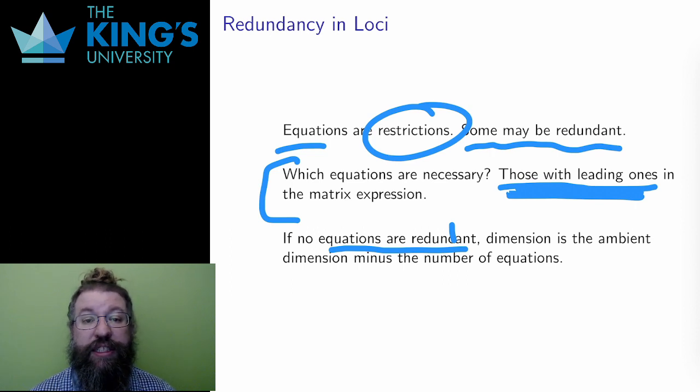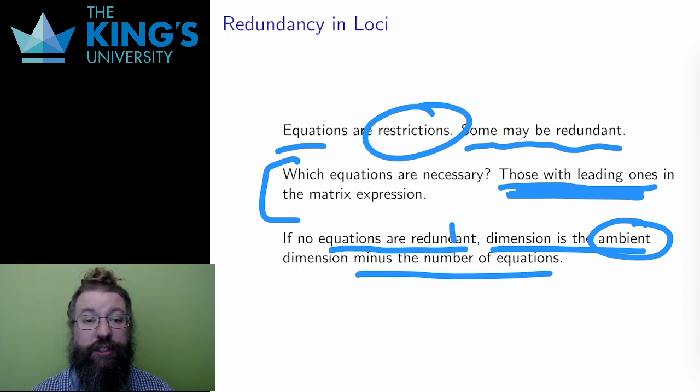Therefore, the dimension is the starting ambient dimension, the n in the Rn I start in, minus the number of equations. With no redundant equations, a locus of three equations in R5 has dimension two, since five minus three is two.